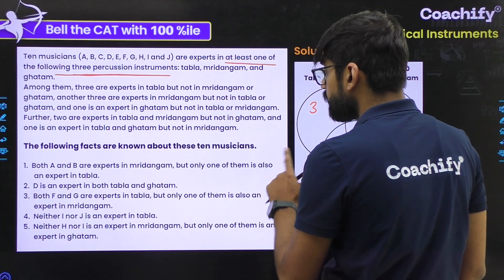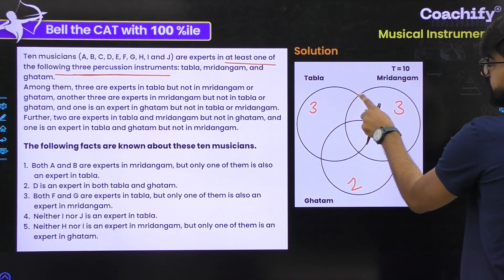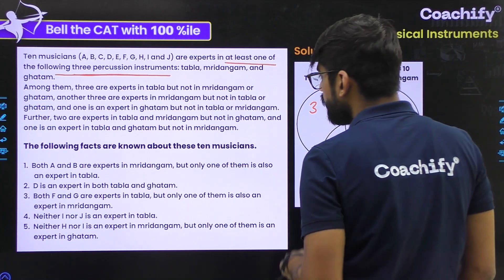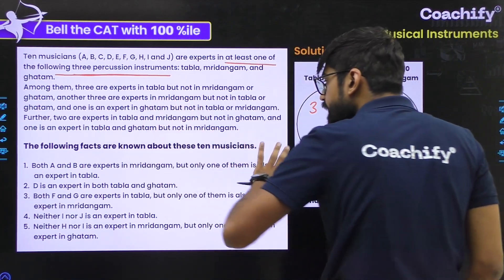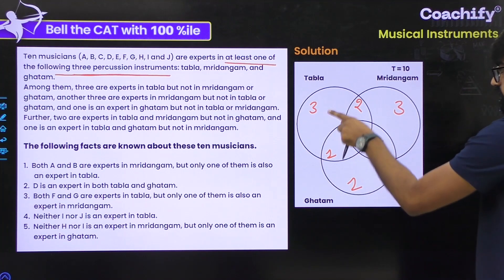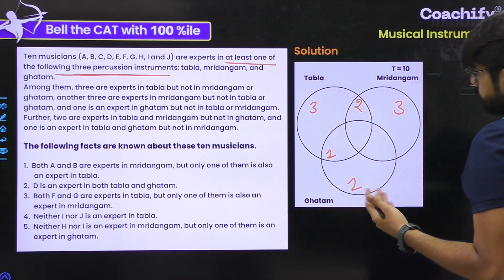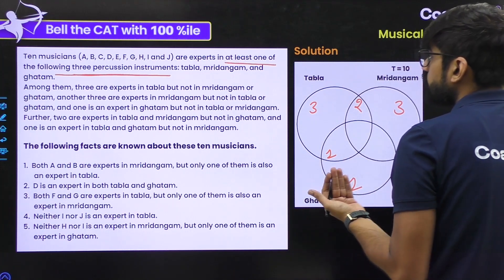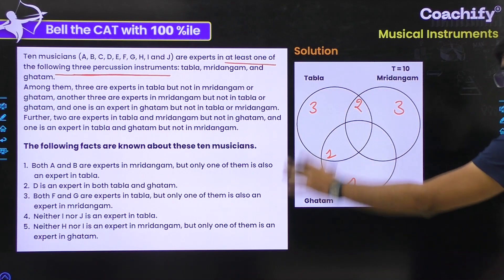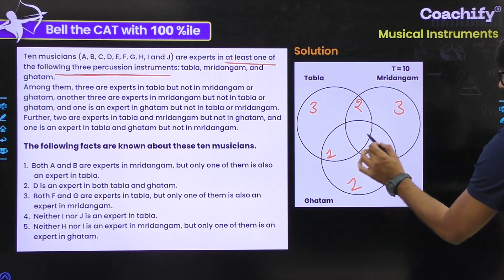Further, two are experts in tabla and mridangam but not in ghatam — that means this intersection section is 2. So we have 3, 3, 6, 2, 8, and 1 gives 9. One more is left. One is an expert in tabla and ghatam but not in mridangam — that gives us 10. Since the musicians are involved in at least one of the three, no musician belongs to none of the sets, so the value corresponding to 'none' is zero.